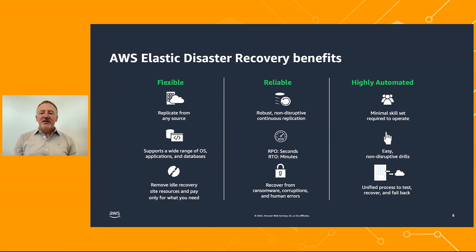What is AWS Elastic Disaster Recovery? It's a flexible, reliable, and highly automated service that minimizes downtime and data loss by quickly recovering your services on AWS in the event of a disruption. With DRS, you can meet stringent RPOs and RTOs, reduce idle recovery site resources, and lower disaster recovery TCO. You can use the same simple process to operate regardless of OS version or application. You can conduct frequent DR drills without impact to replication or user activities, and you only pay for what you need as you go.